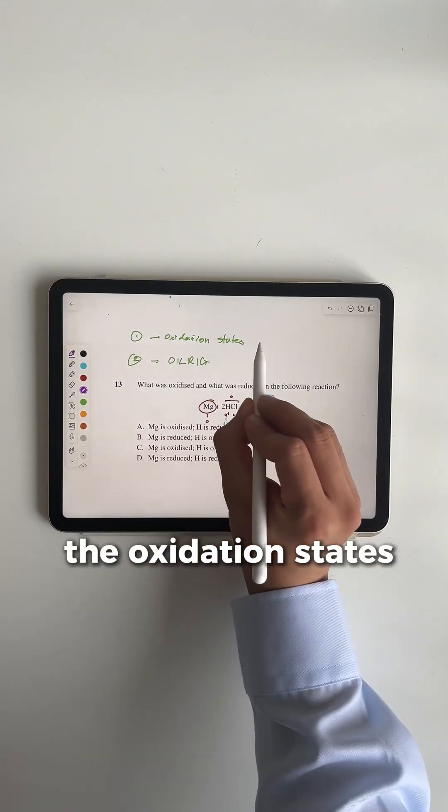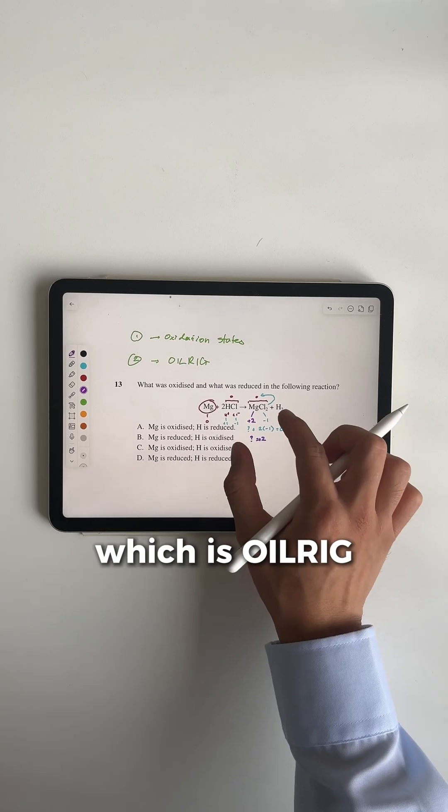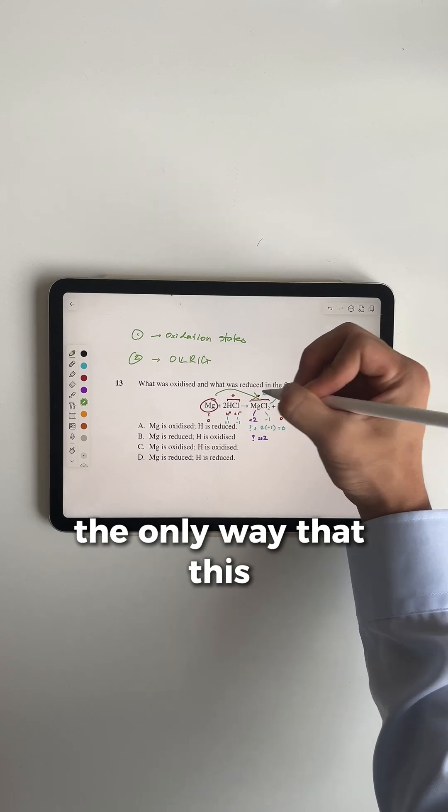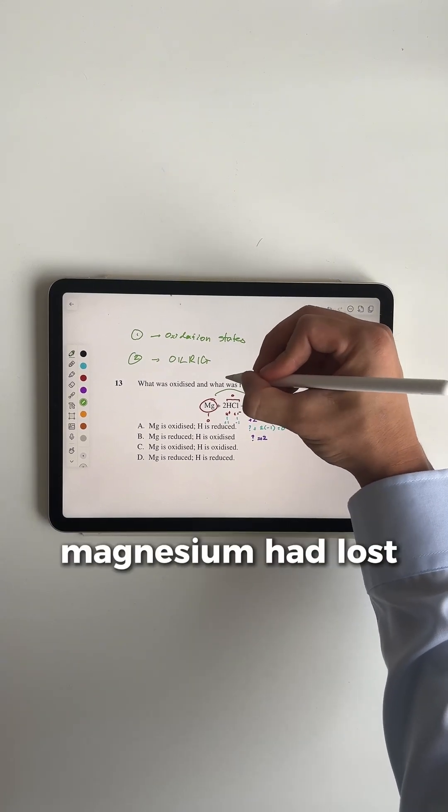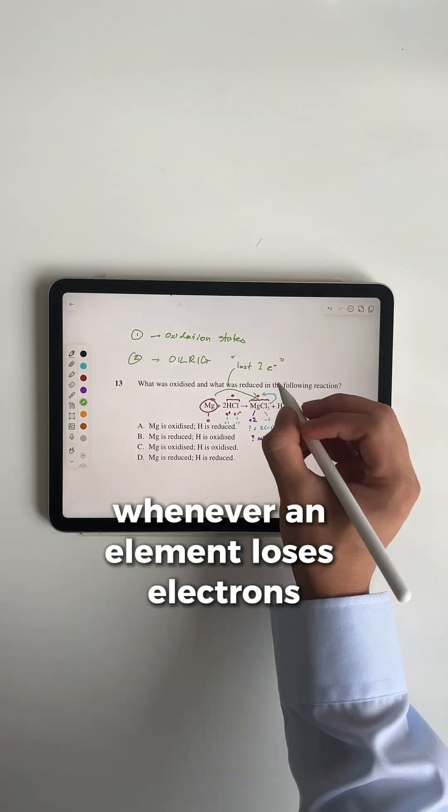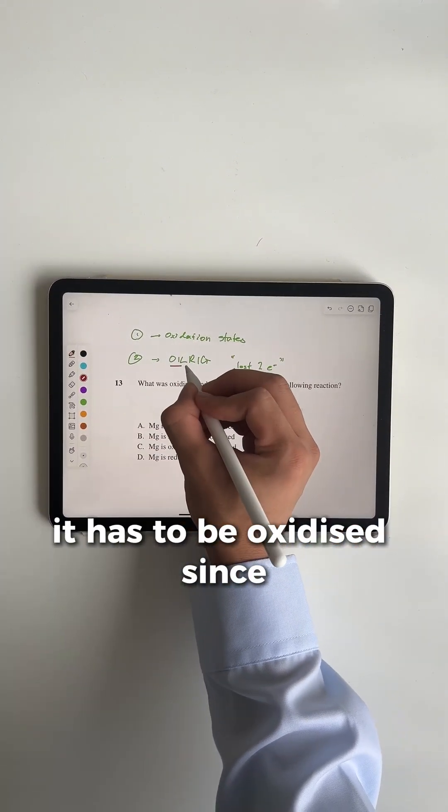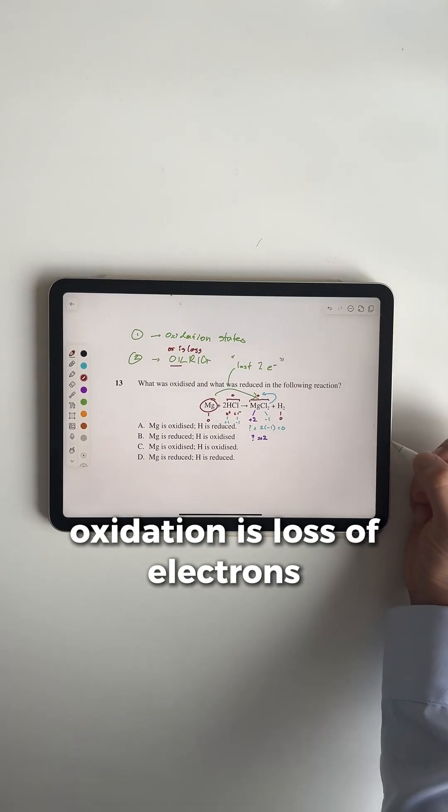Having written out all the oxidation states, we can now move on to the second step, which is OIL RIG. Looking at magnesium, it's gone from a state of zero to +2. The only way this could be possible is if magnesium had lost two electrons. Whenever an element loses electrons, it has to be oxidized, since oxidation is loss of electrons.